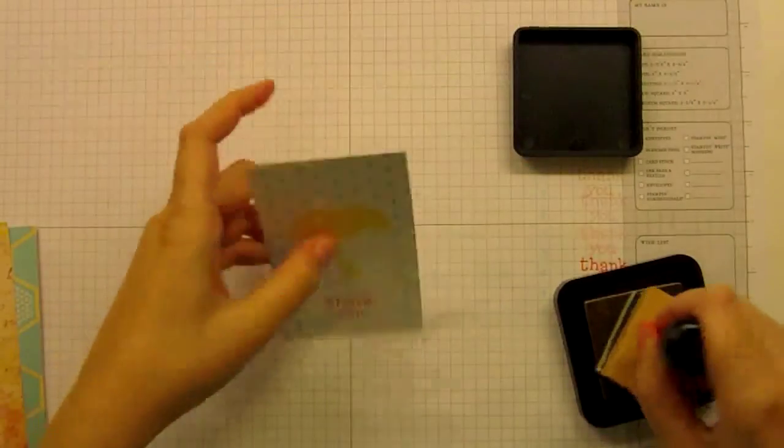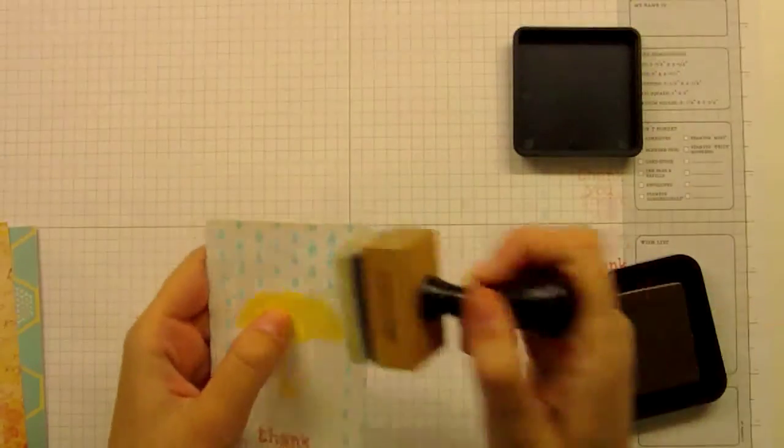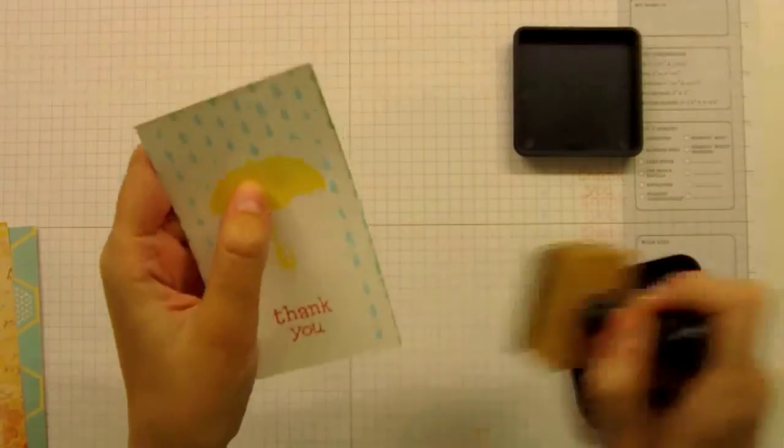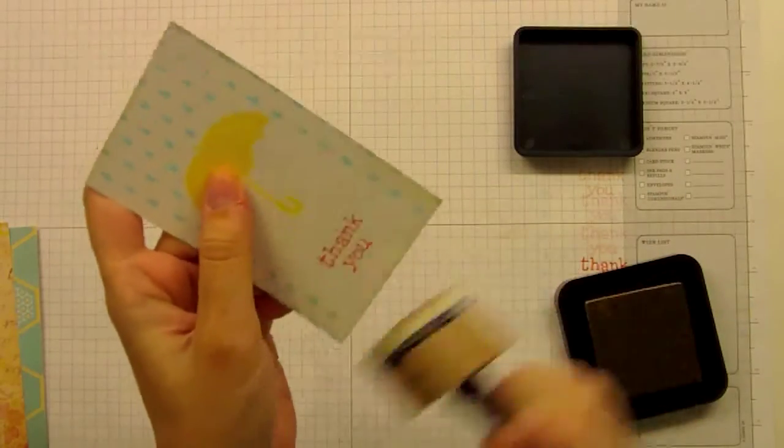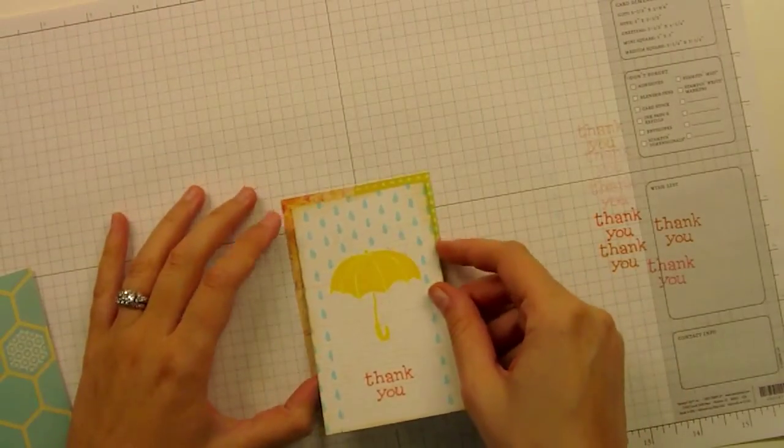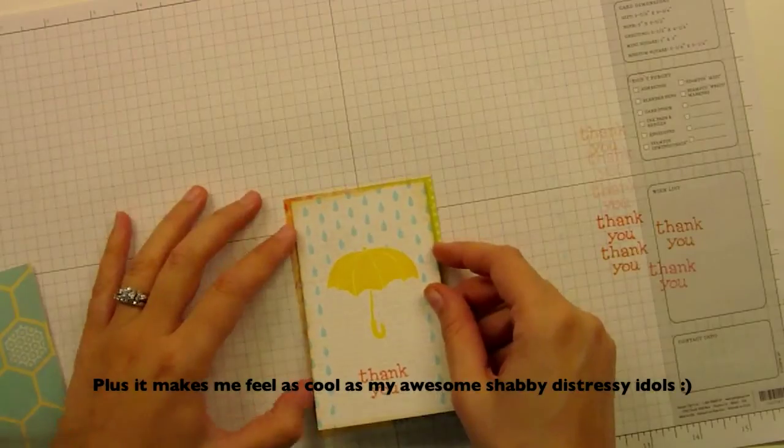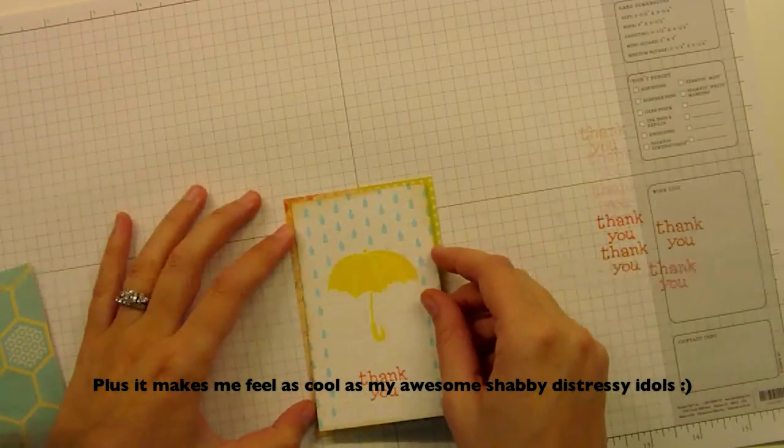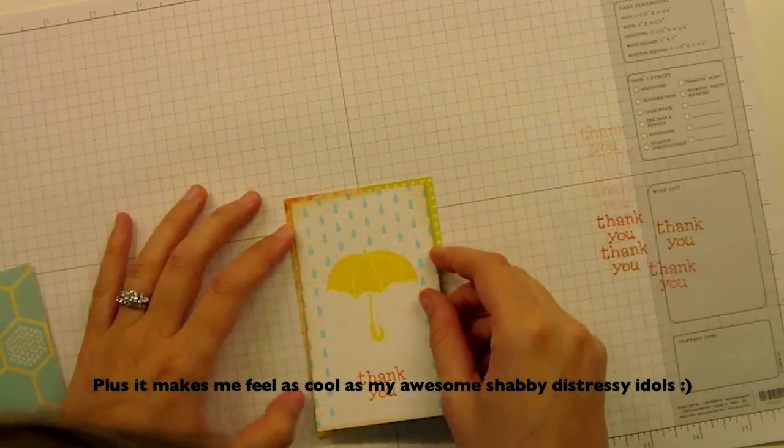Right now I'm just going to use some distressing, the antique linen color, all around the edges. I thought it looked a little plain. I just wanted to make sure that it would pop off the card. So I'm not really distress distressing, I'm just giving it a little border. And that really works. Even if you do more clean and simple like I do, the distress with the foam pad thing is so cool. I love it.